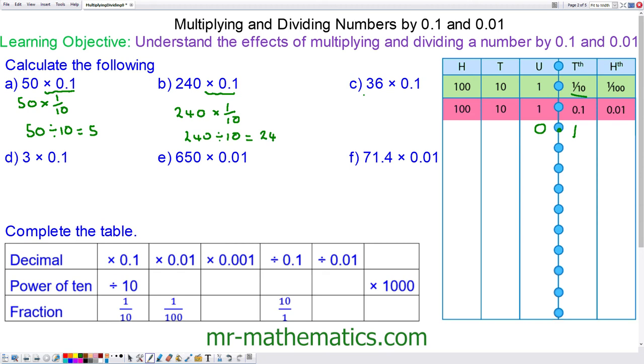And we have 36 times 0.1 which is divided by 10. So we've got 36. We're moving every number to the right one place. So we have 3.6.